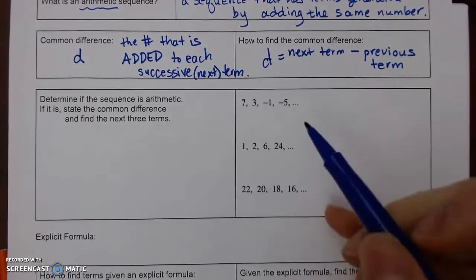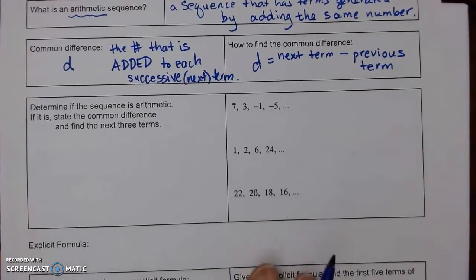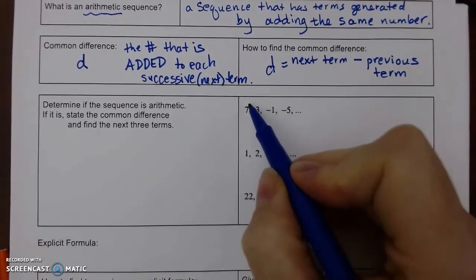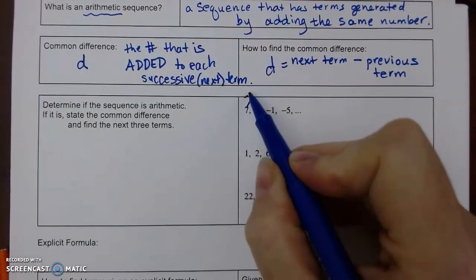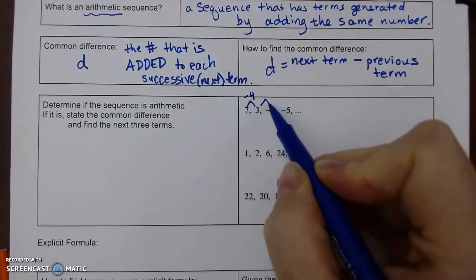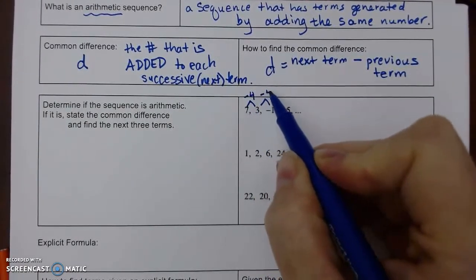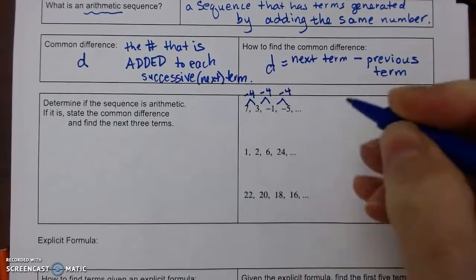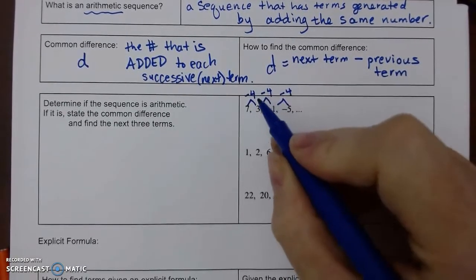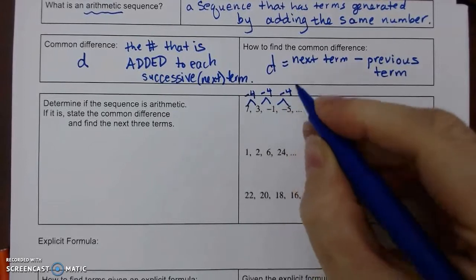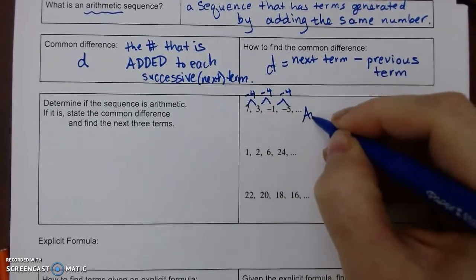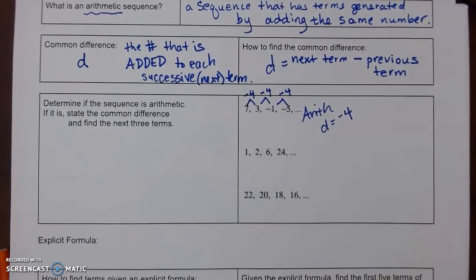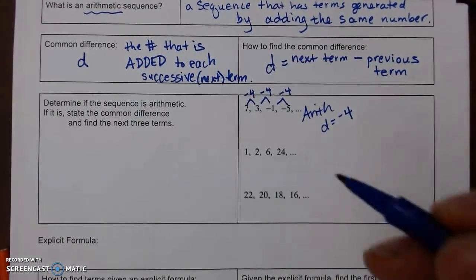The first sequence is 7, 3, -1, -5. From 7 to 3 I subtract 4, and 3 to -1 subtract 4 — the same number each time, so it is arithmetic. The common difference is -4, and I need to continue the pattern to find the next three terms.